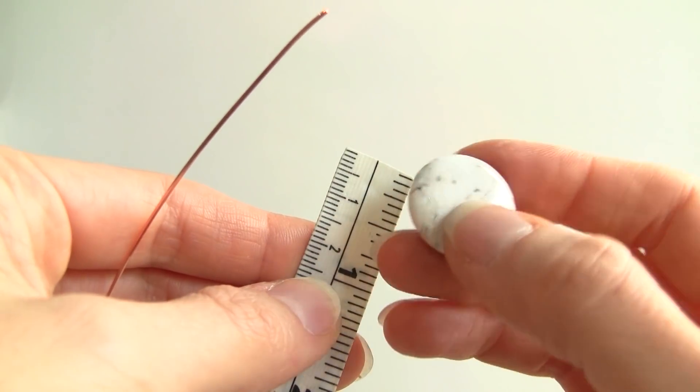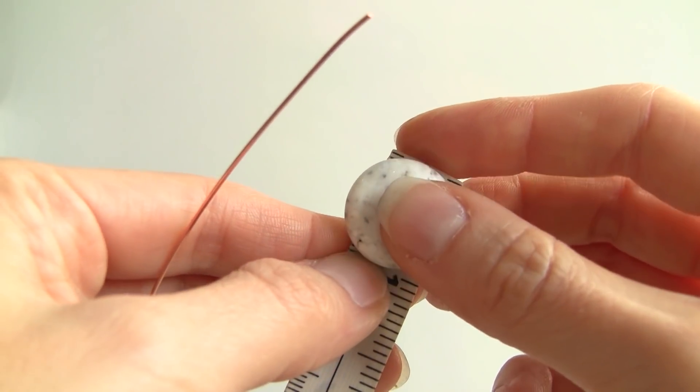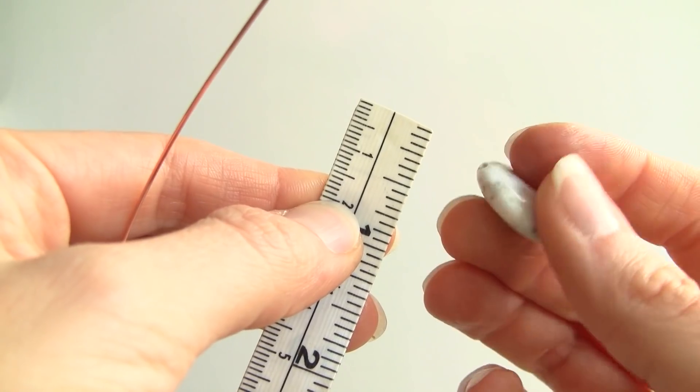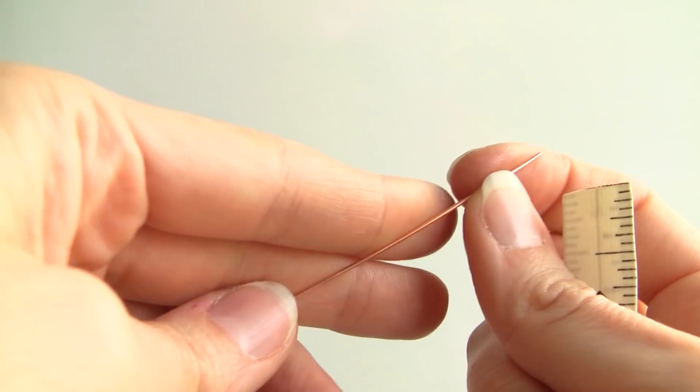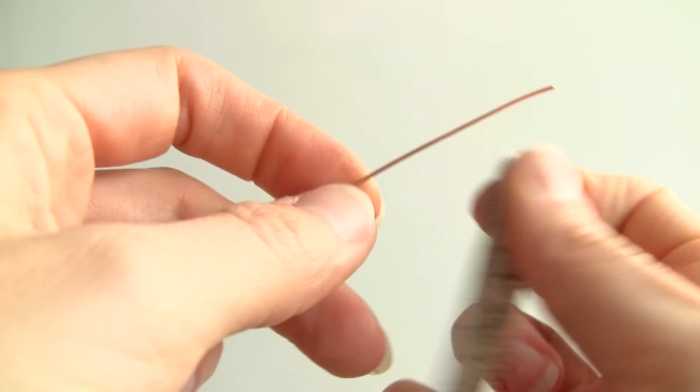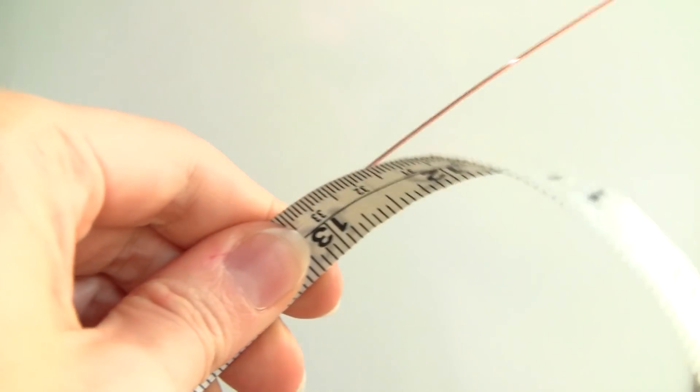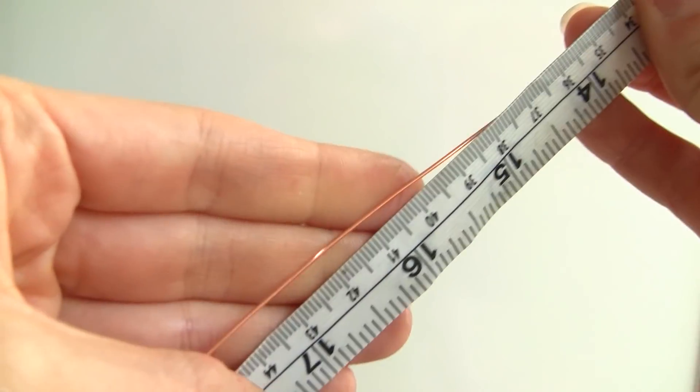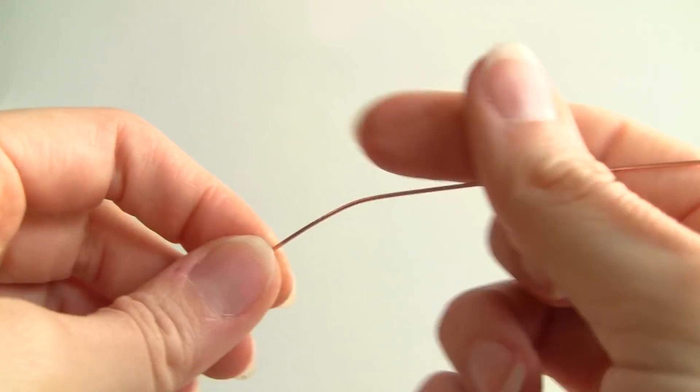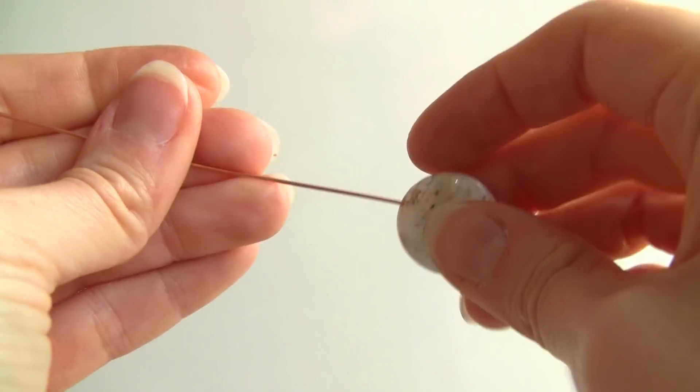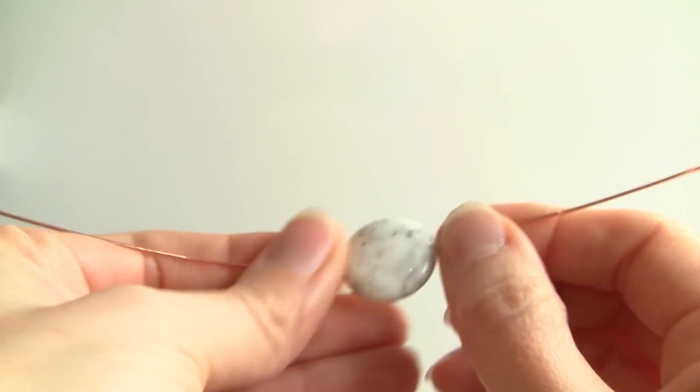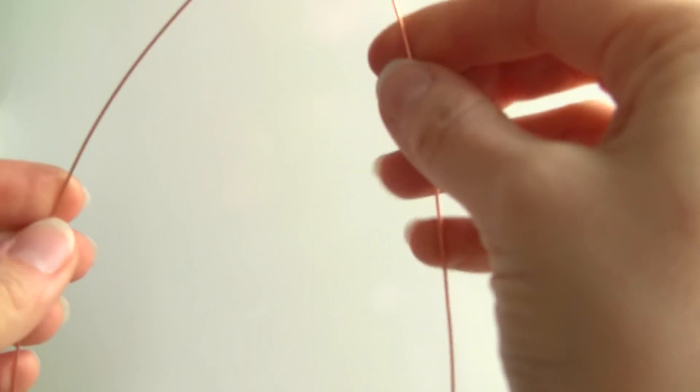So I have a round coin bead that is about 20 millimeters and then I have 20 gauge round dead soft copper wire. That is 18 inches and this is probably a little bit too long but I want to have some extra so if you feel like you want to add on to this and make it something different, you have that flexibility.